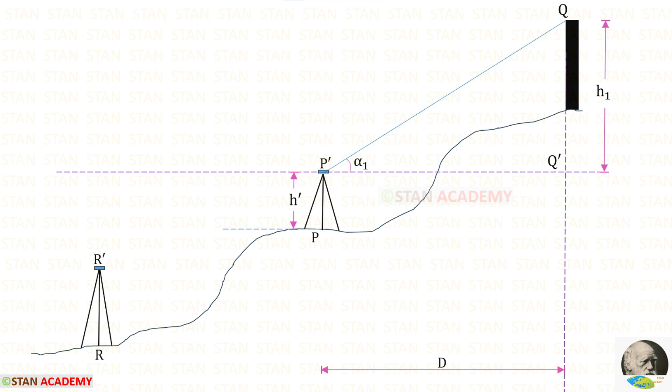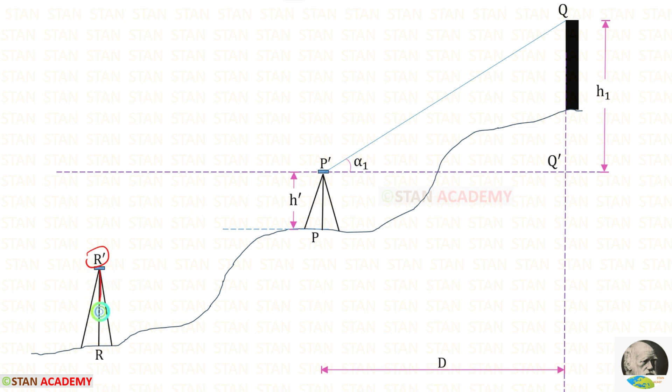Now we need to select the second point. Let us keep the second point as R. In this point we have to install a theodolite. R dash is the vertical projection of point R.